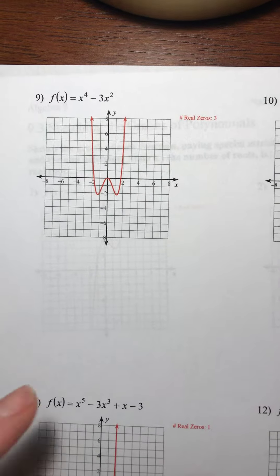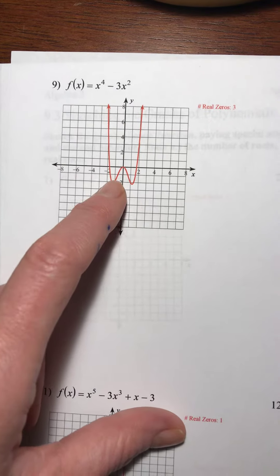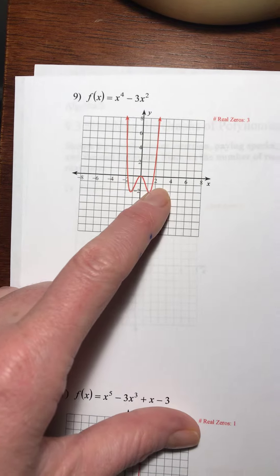One last thing to note is when we have a graph that comes up like number nine and touches the x-axis and then bounces back down,